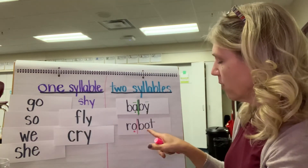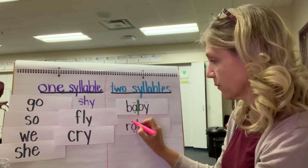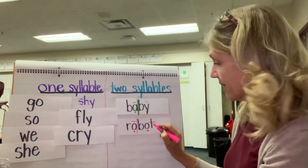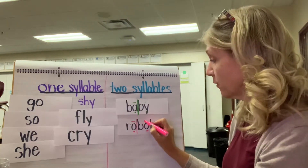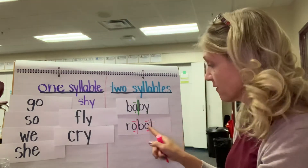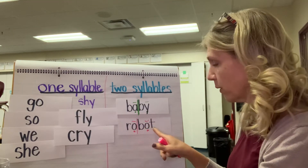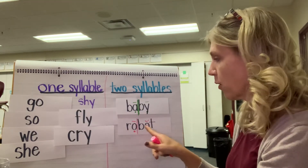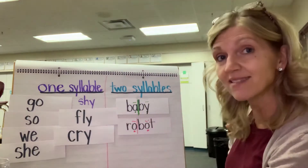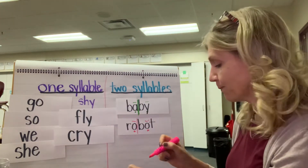This would be R-O — that's an open syllable — and B-O-T. That would be a closed syllable because it's got that T closing off the second O. So it's 'ro-bot' — the T closes off that second O. 'Robot.'